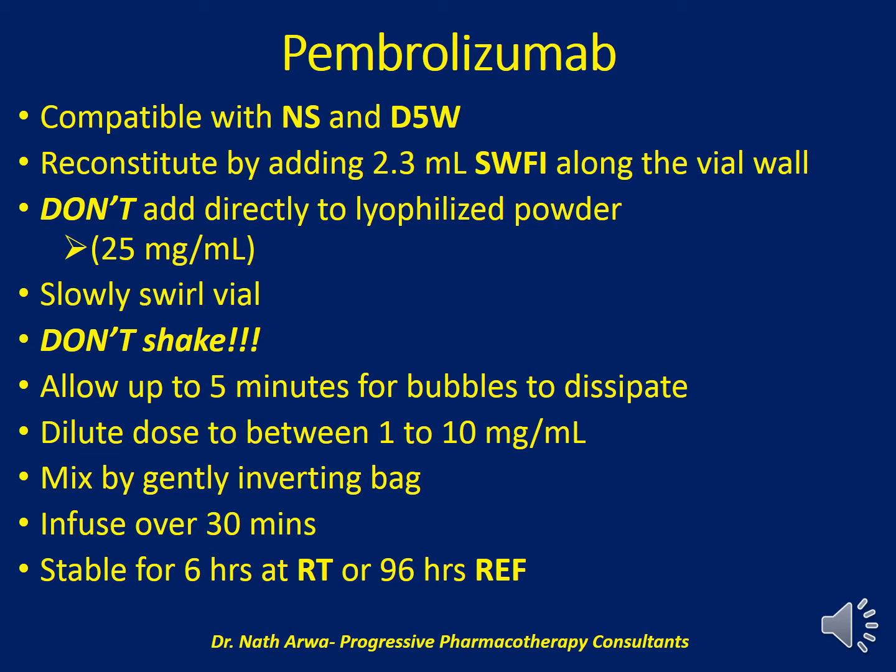The pembrolizumab dose should be diluted to between 1 and 10 mg per ml using an IV fluid of choice. After diluting in the bag, mix gently by inverting the contents to avoid foaming. Once homogenized, infuse the final product over 30 minutes. Such products are stable at room temperature for 6 hours or under refrigeration for up to 96 hours.